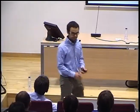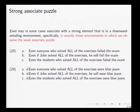We're going to focus on this weak associate puzzle and try to resolve it by positioning it in the bigger paradigm of the distribution of 'even'. This other part of the paradigm involves the so-called strong associate puzzle. 'Even' may associate with a strong element in a downward entailing environment — in exactly those environments in which we observe the weak associate puzzle: restrictors of 'every', antecedents of conditionals, restrictors of definite descriptions, etc.